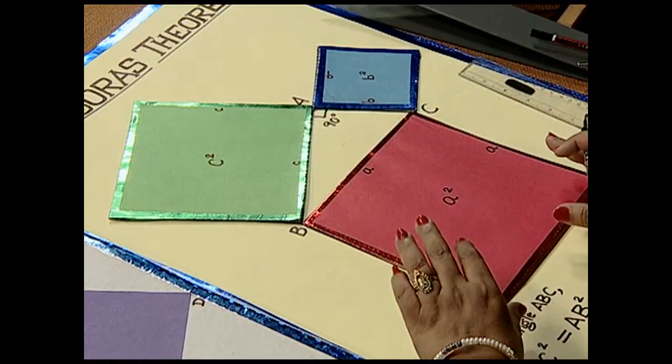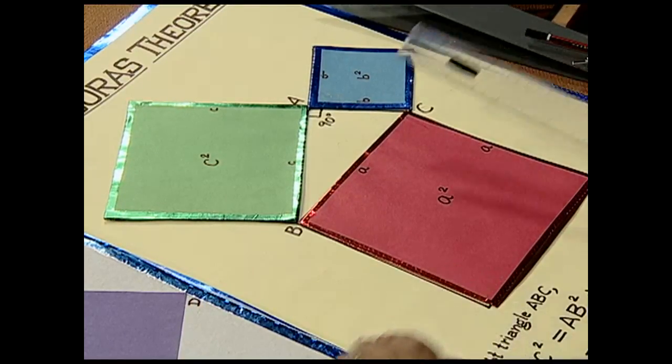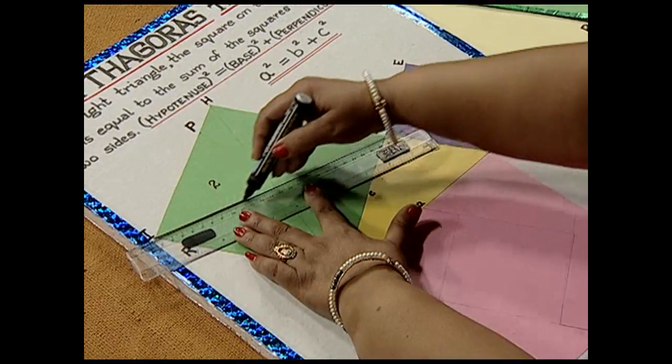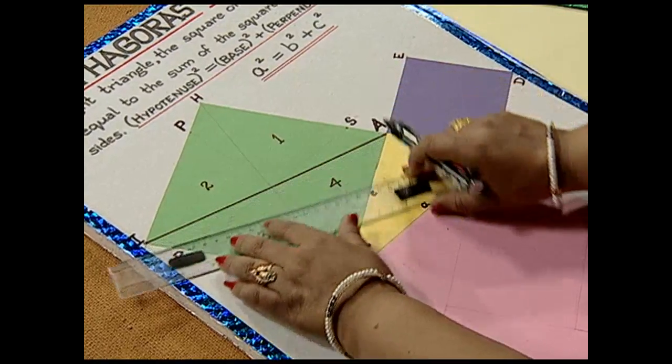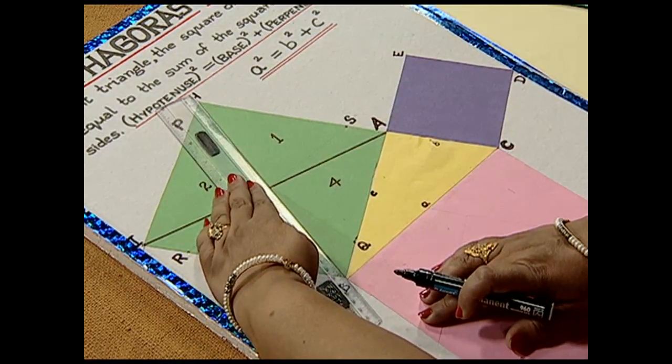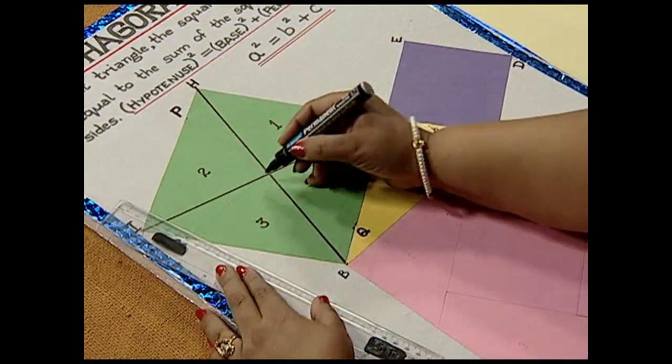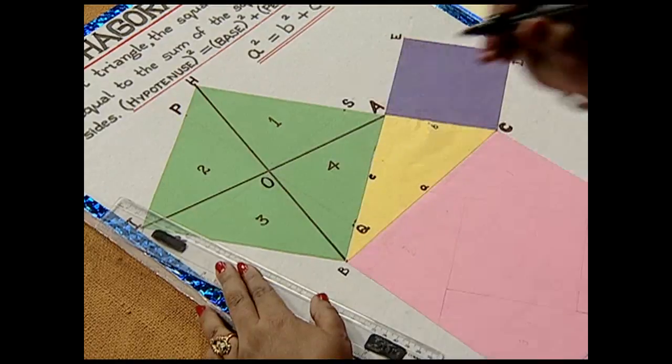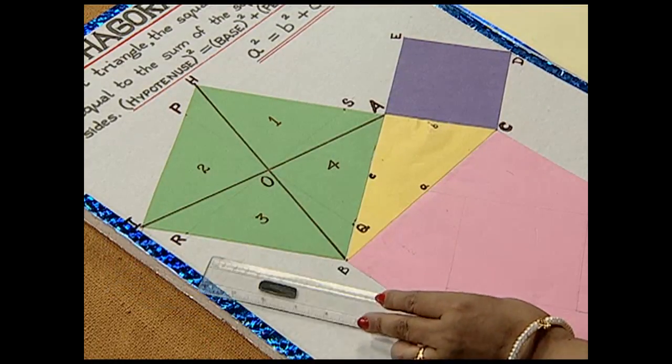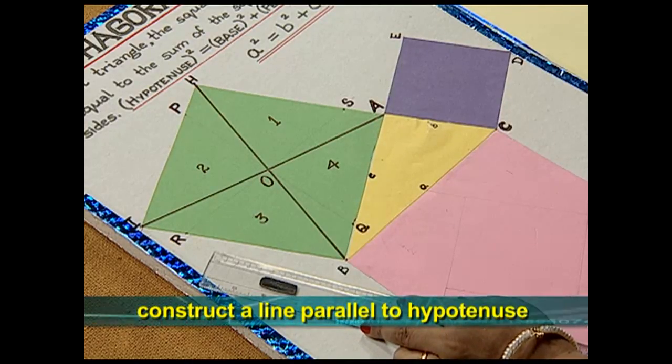Now in order to verify our theorem, we need to do some constructions. Look here, first of all we join the diagonals AI in this manner, and also we join HB. This is also a diagonal and both the diagonals intersect each other at point O.